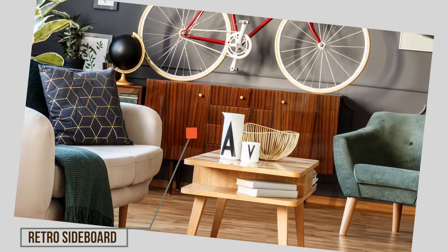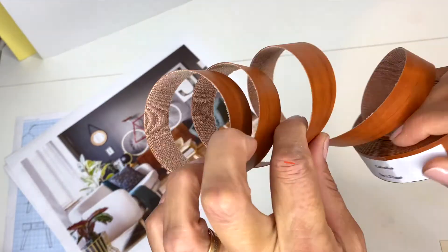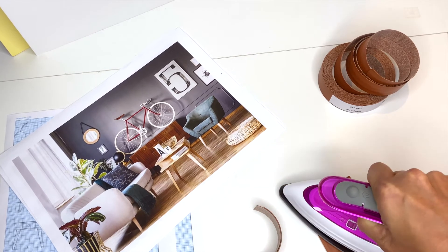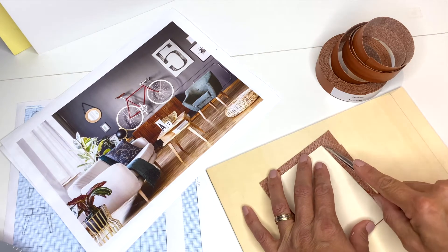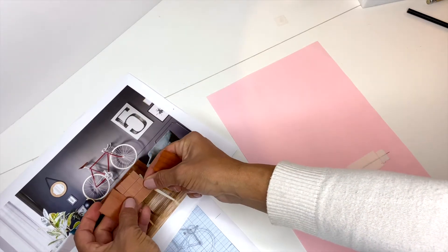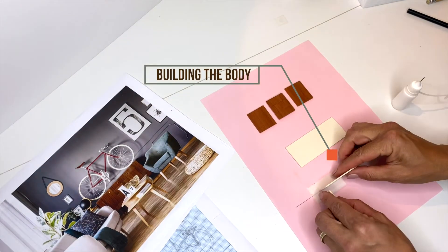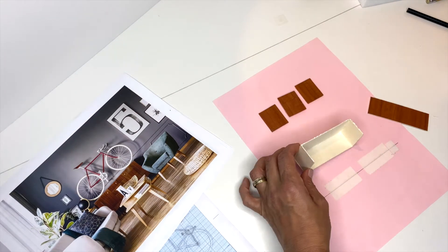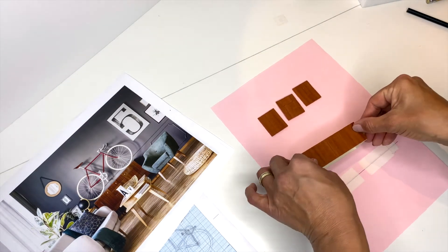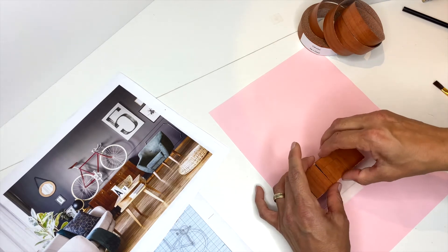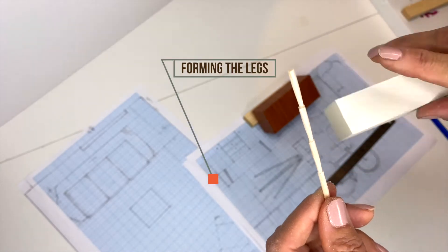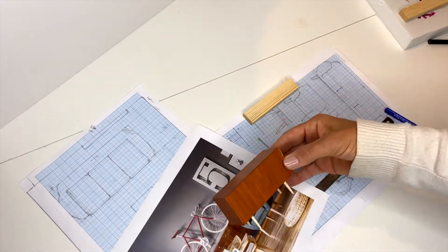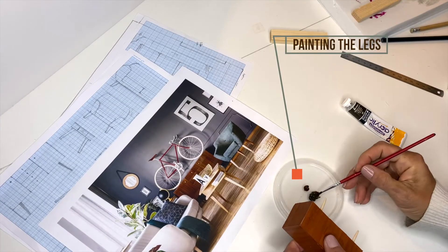Now let's make the vintage sideboard. I use Calvatus wood edge band, ironing it to 1.5mm matte board. Then I cut the side doors, the drawer part in the middle and the counter top out of it. I build the body of the sideboard with matte board and glue the veneered parts on. For the legs, I use a balsa wood stick. I mark the lengths and sand them into shape before cutting them apart. The legs get a nice dark brown color.